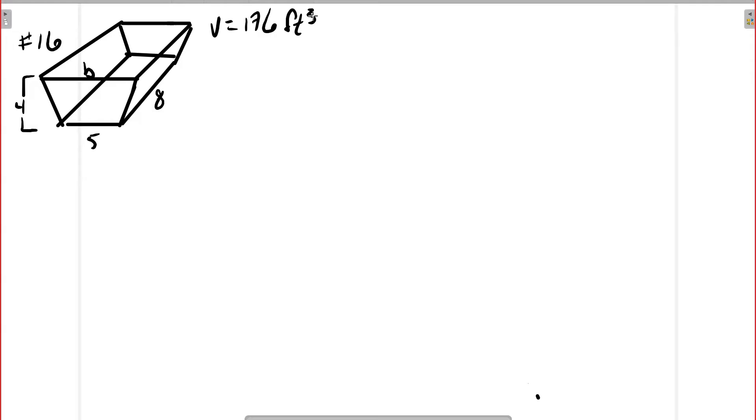This is one of those questions where they're trying to get us to work backwards. We're still using the volume of a trapezoid equation, so volume equals the area of the trapezoid times the length.